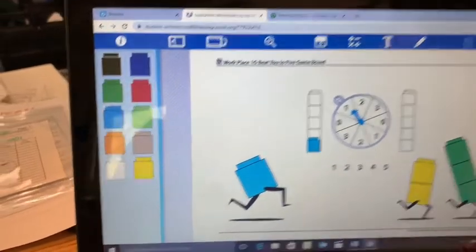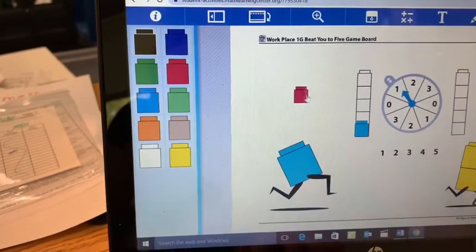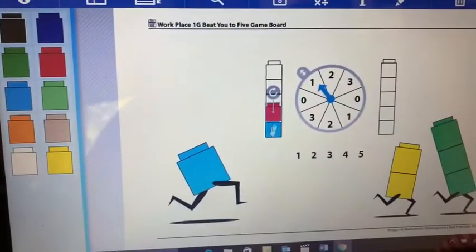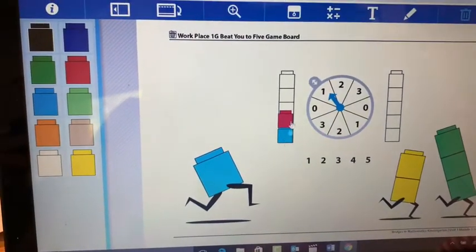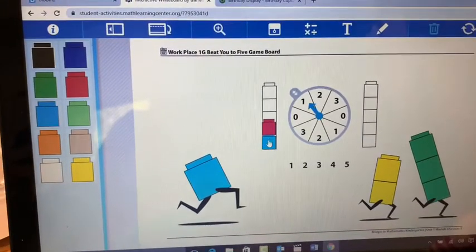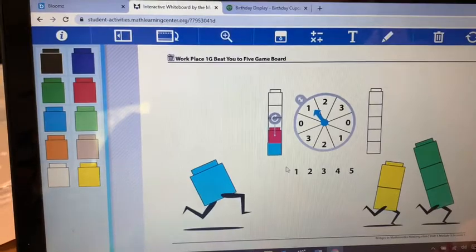One. One more. Now this time, I'm going to use a different color. I'll put it right there. Now I can talk about one plus one plus three. Or what do you guys see? Yeah, two and three. Two and three makes five.